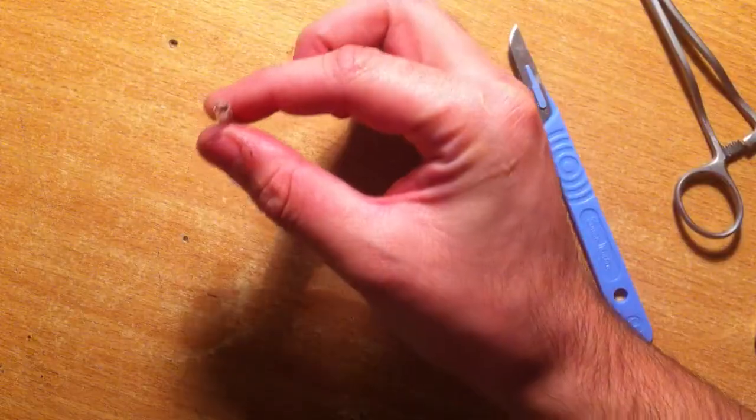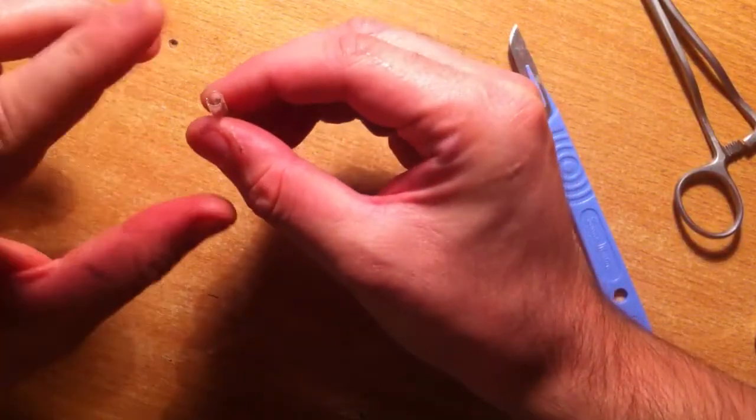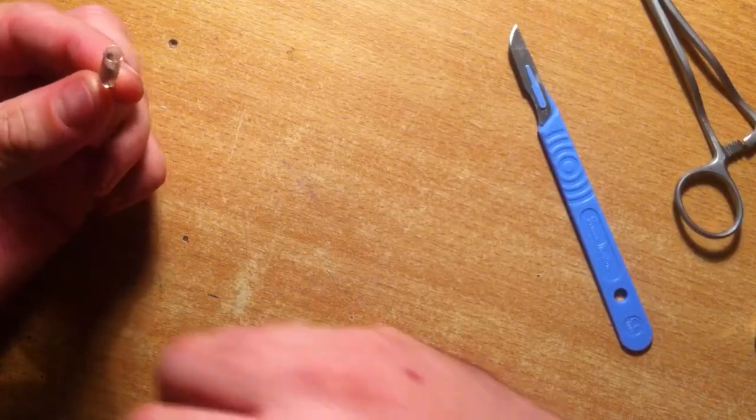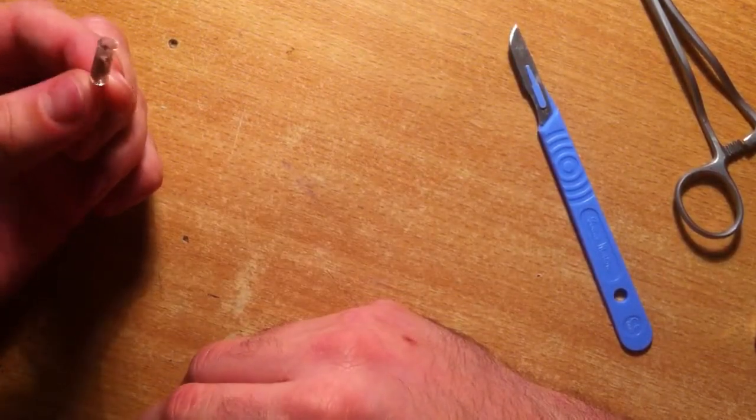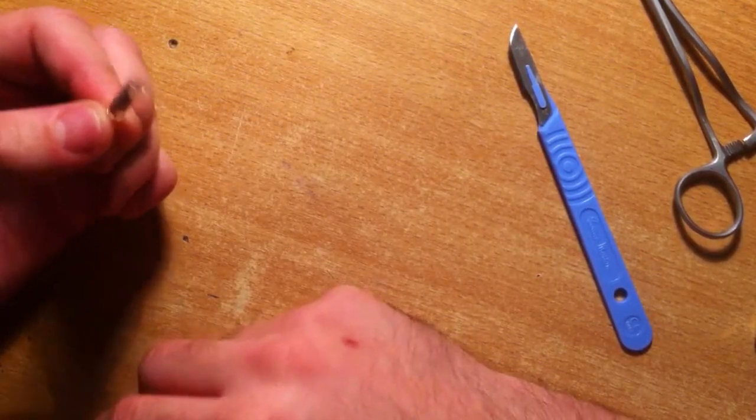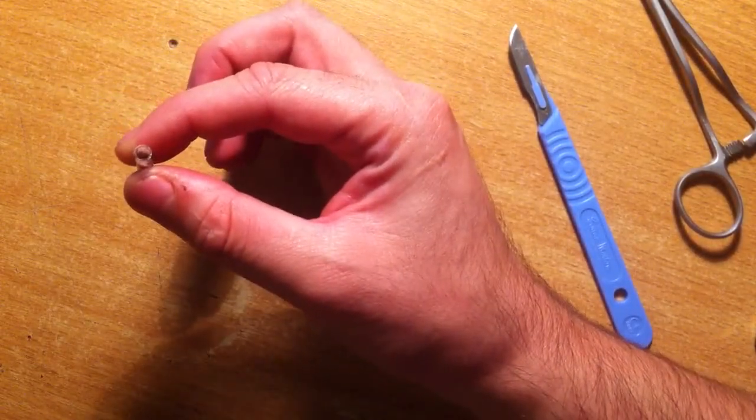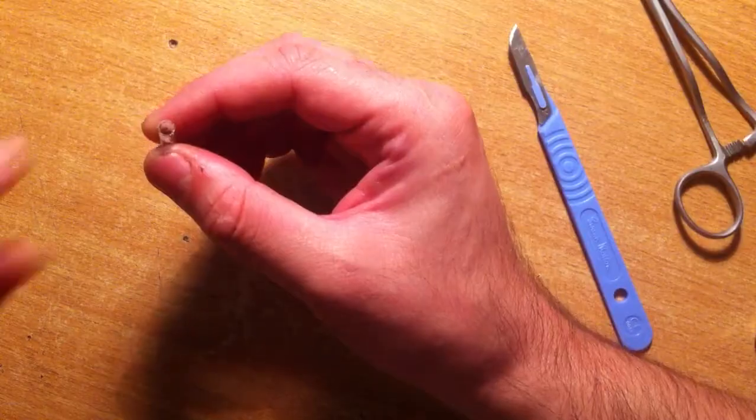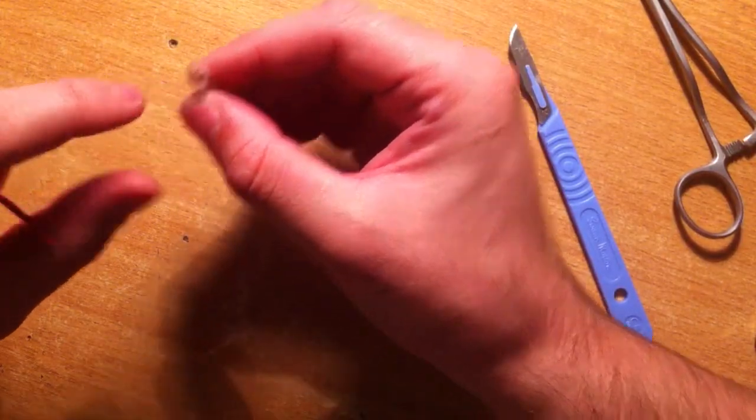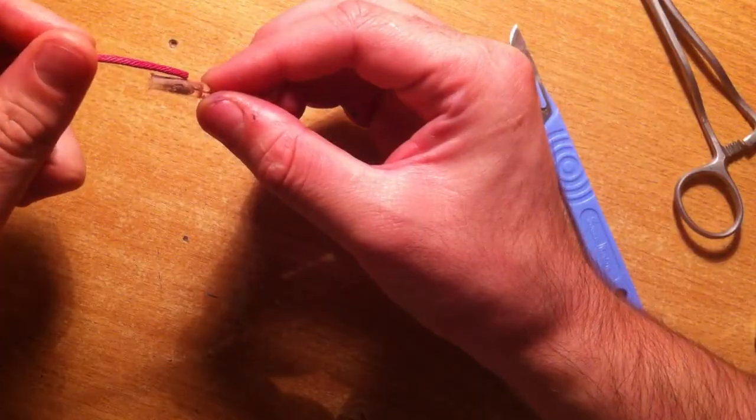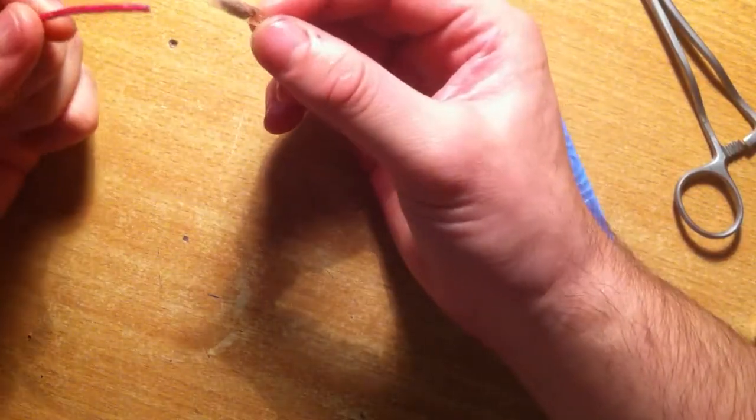And then what you're going to want to do to complete the e-match are two options. The first option is get yourself some putty of some kind and simply putty up the end. And then this will be taped to your fuse like so, you just tape it to the side and the heat will ignite the fuse.